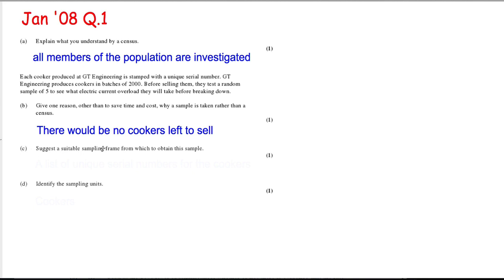Next part: suggest a suitable sampling frame in which to obtain the sample. How could we categorize or list our cookers? Well, I would do a list using the unique serial numbers for all the cookers. And then the sampling units are the cookers themselves.